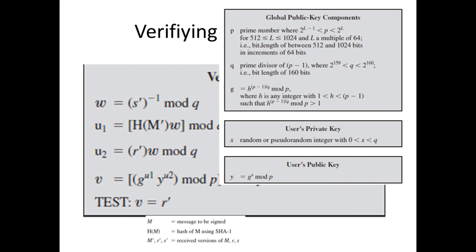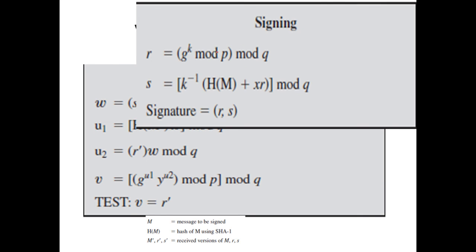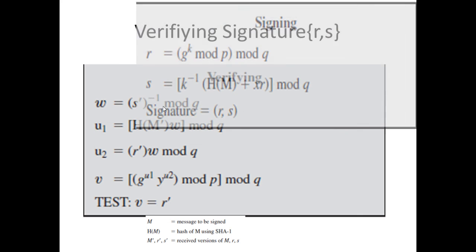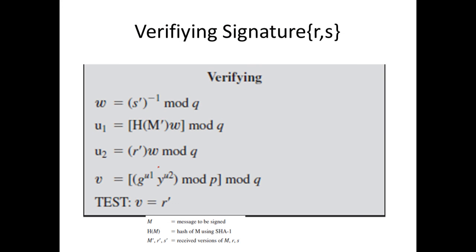The references for P, Q, G, X, Y, R, and S are noted here just to confirm that all these values have already been computed in the previous steps. I hope you have all understood the Digital Signature Standard algorithm. Thank you.